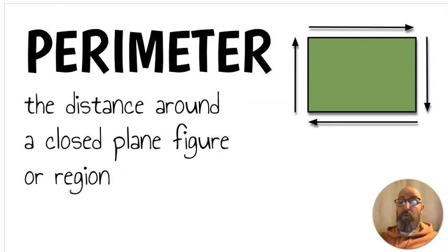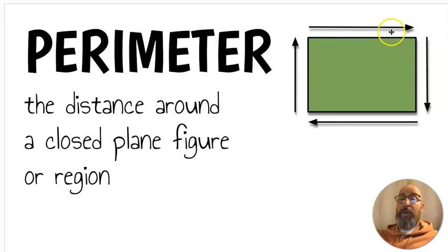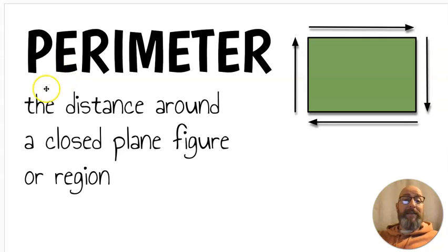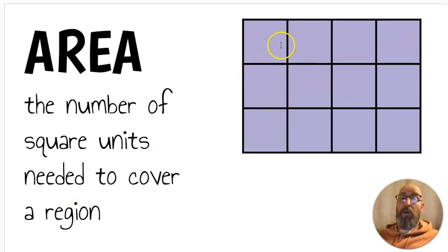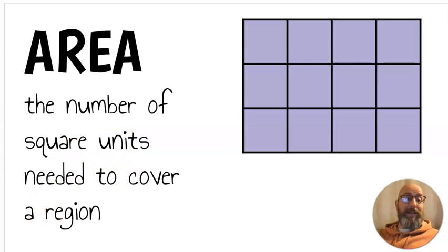Next we have the word perimeter. Perimeter is the distance around a closed plane figure or region. If I were to start measuring and go all the way around this rectangle, I would find the perimeter. If I were measuring the inside, that's the area. The area is the number of square units needed to cover a region. In this example I have three rows of four, so the area would be 12 square units.